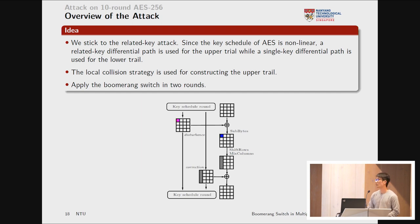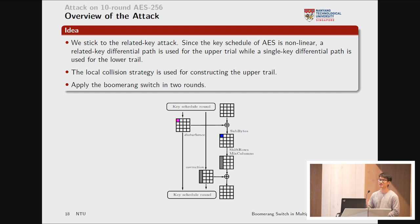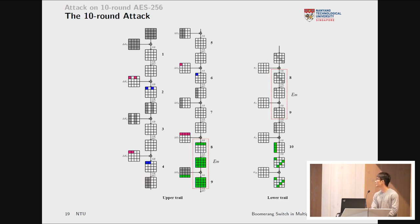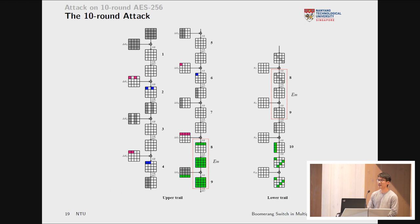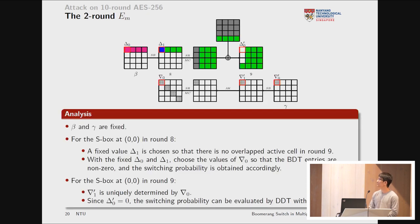For constructing the upper trial we use a local collision strategy: introduce a difference into the internal state, then after one round the next round-key difference cancels out the internal difference, repeating this pattern for several rounds. We apply the boomerang switch in two rounds in the middle to gain benefit. The upper trial covers rounds 1–9, the lower trial covers rounds 8–10, with round 10 used for key recovery and rounds 8–9 covered by EM.